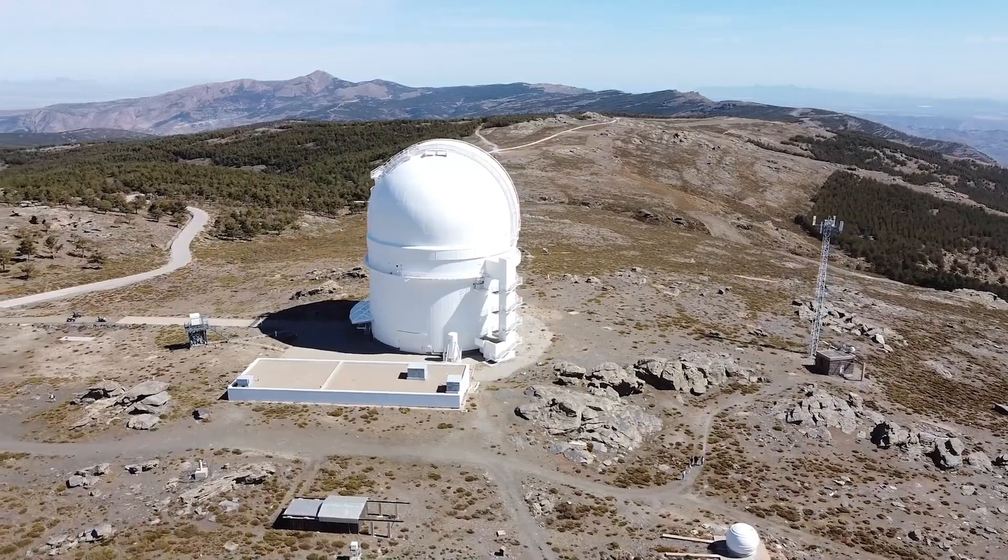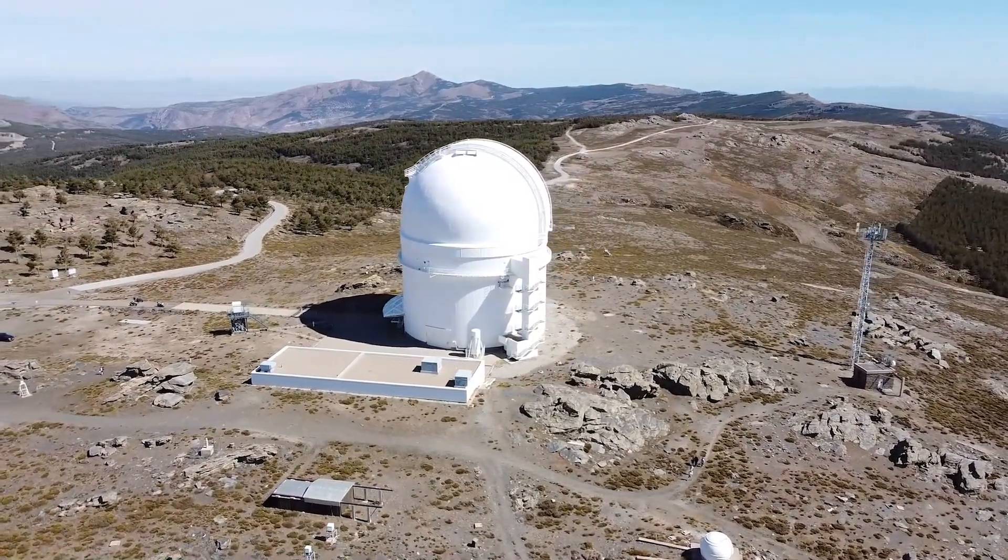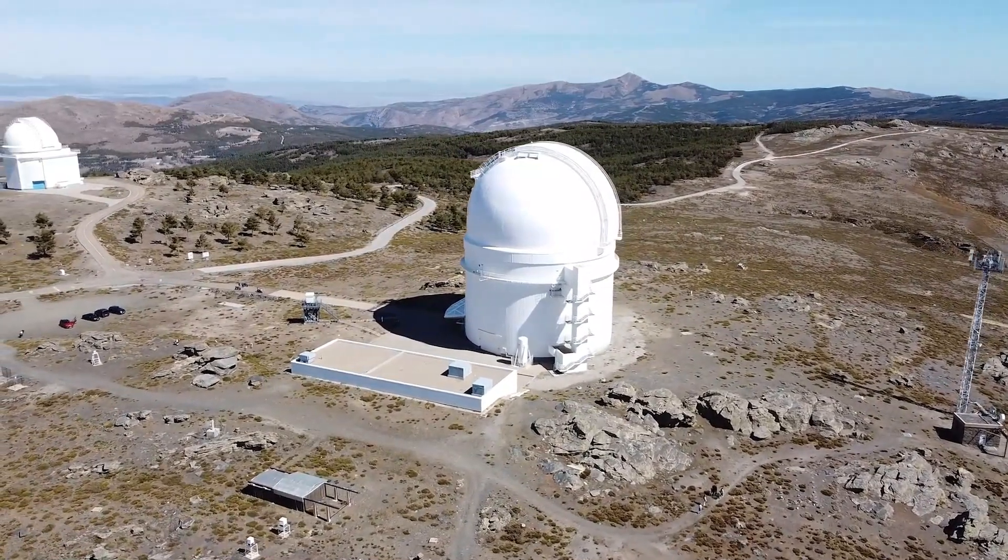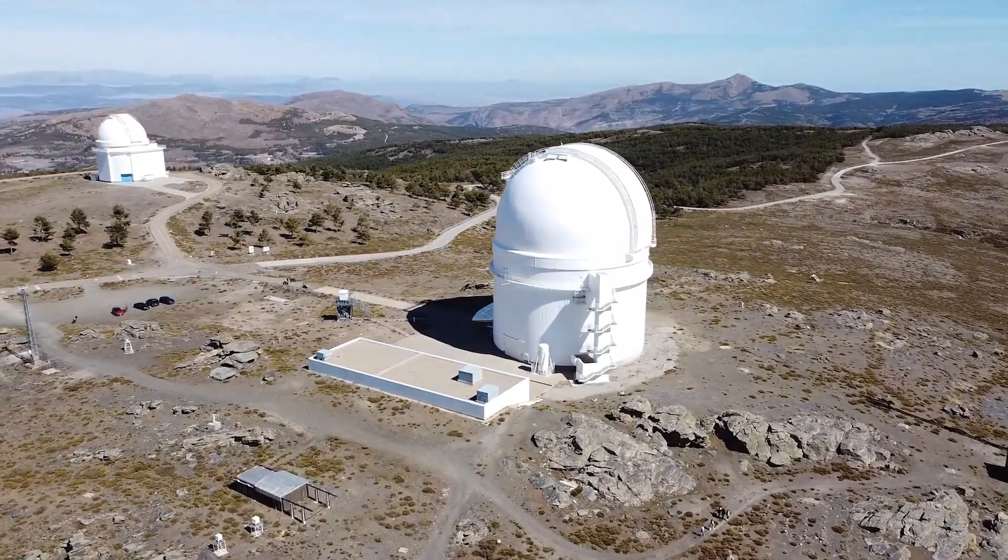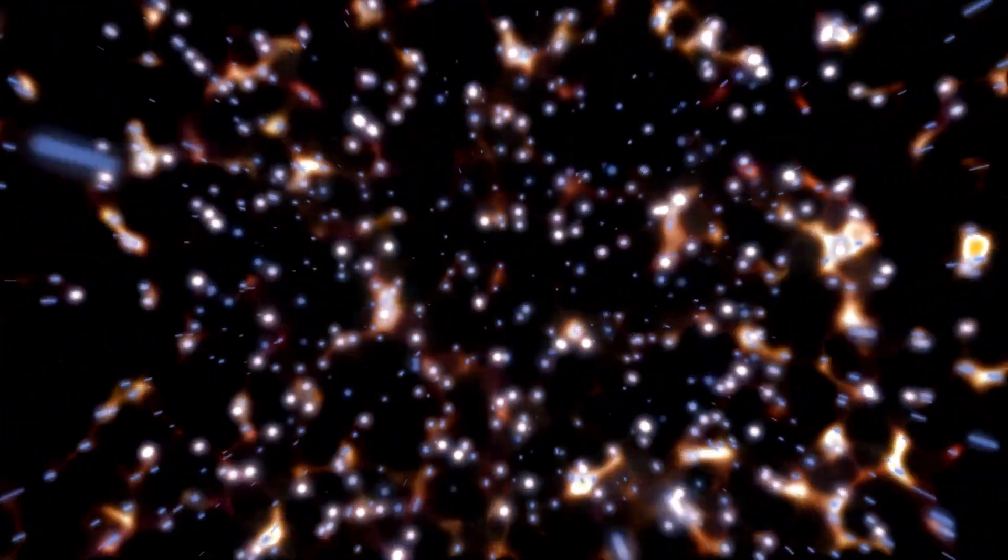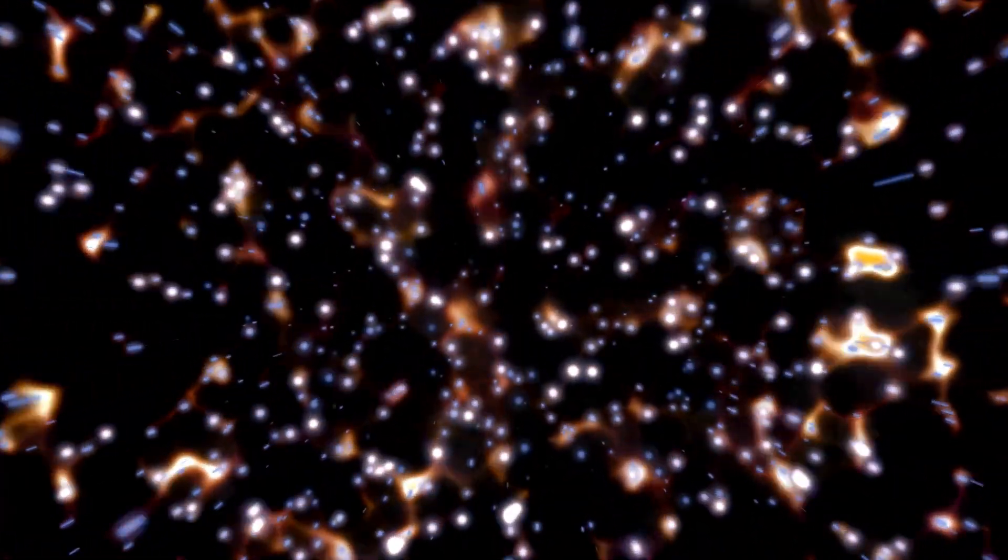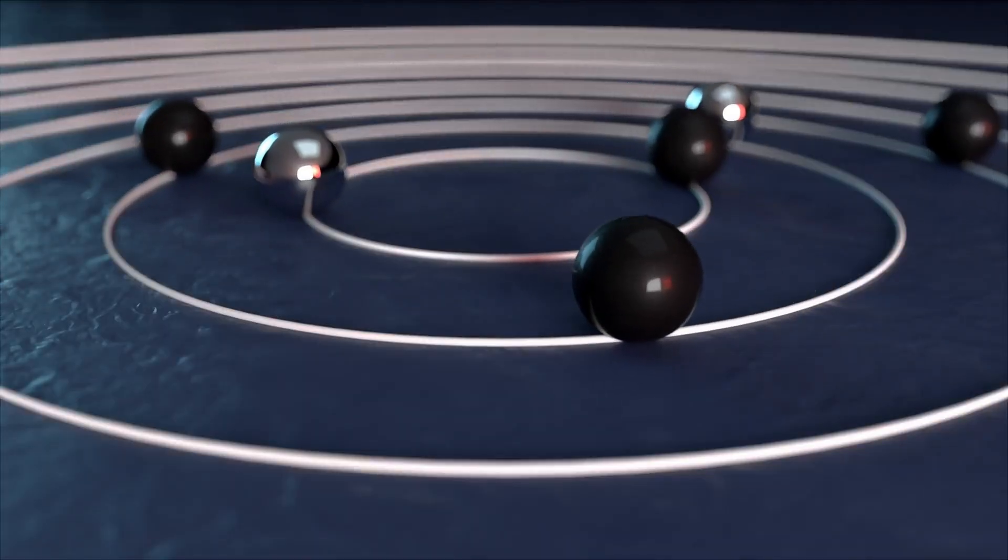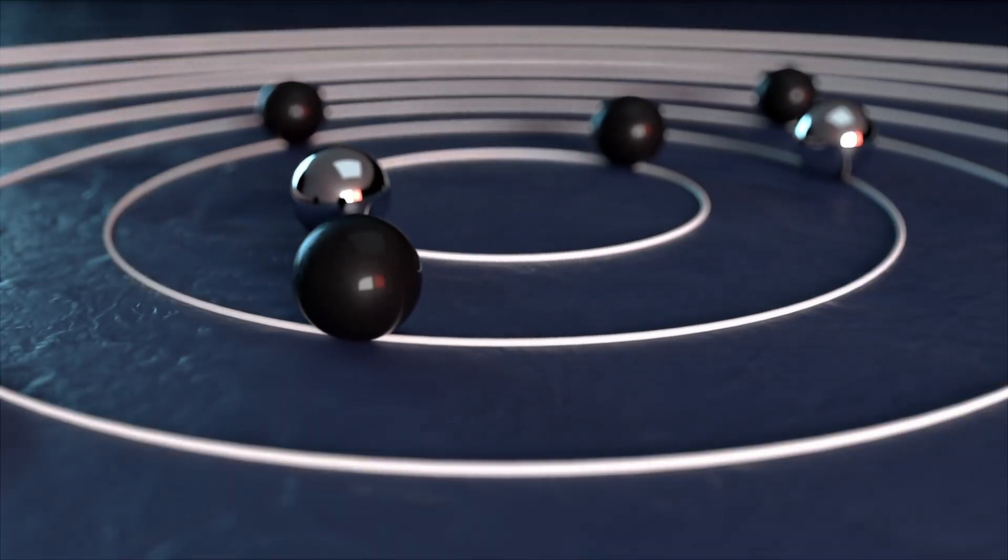Other scientists offered more grounded theories. Some proposed that Oumuamua may have been ejected from another star system during a catastrophic event, like a supernova. Billionaire Elon Musk and researcher Karen Meech floated the idea that it could have originated from a collision between two celestial bodies, forming a rare hybrid structure.